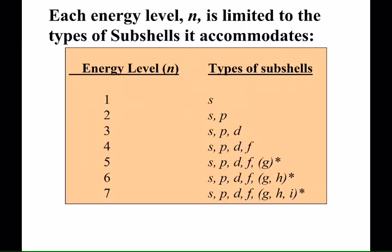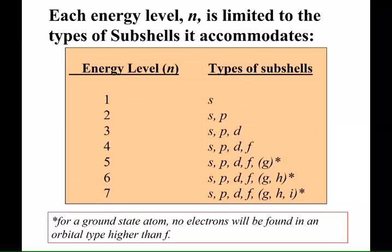In 6, you pick up g and h; in 7, you pick up g, h, and i. Those little asterisks next to those higher types of subshells, beginning with principal energy level 5, 6, and 7—when we find homes for electrons and see where they actually are with regard to subshells, we're going to see that we don't need to use these. They're not occupied as electrons are hanging out in their ground state.